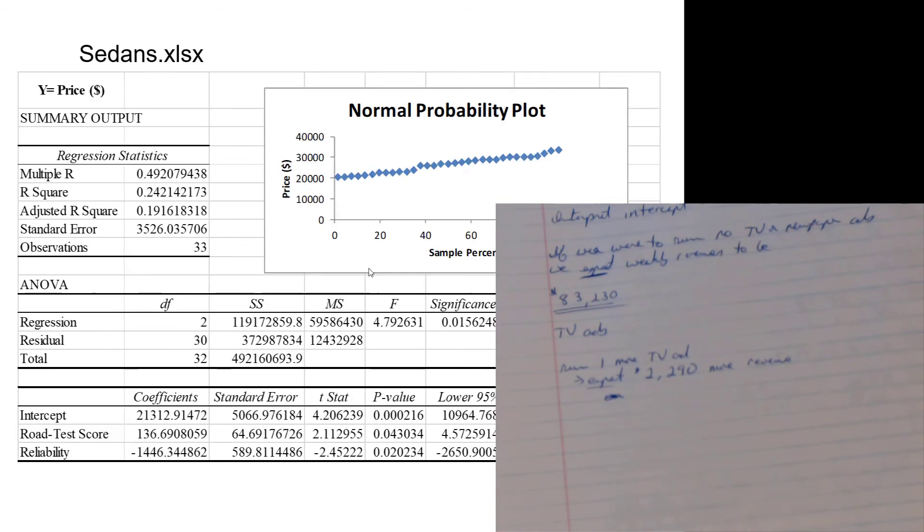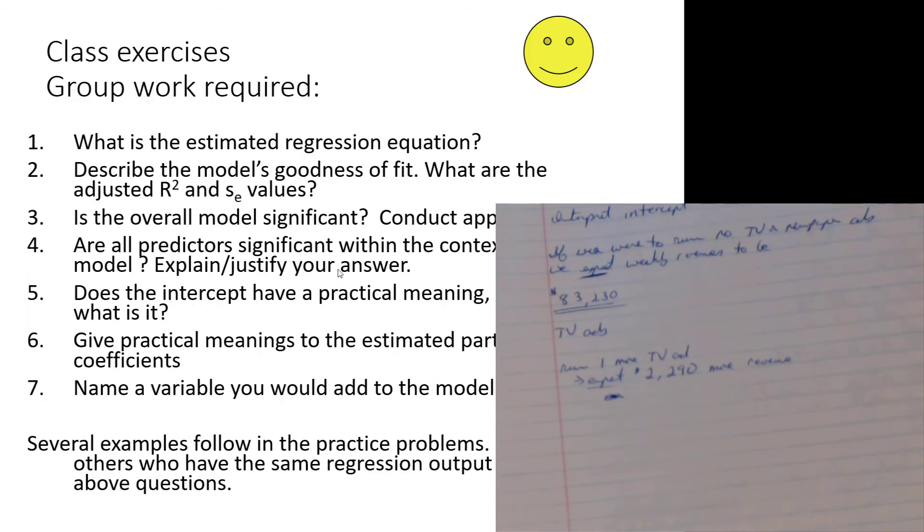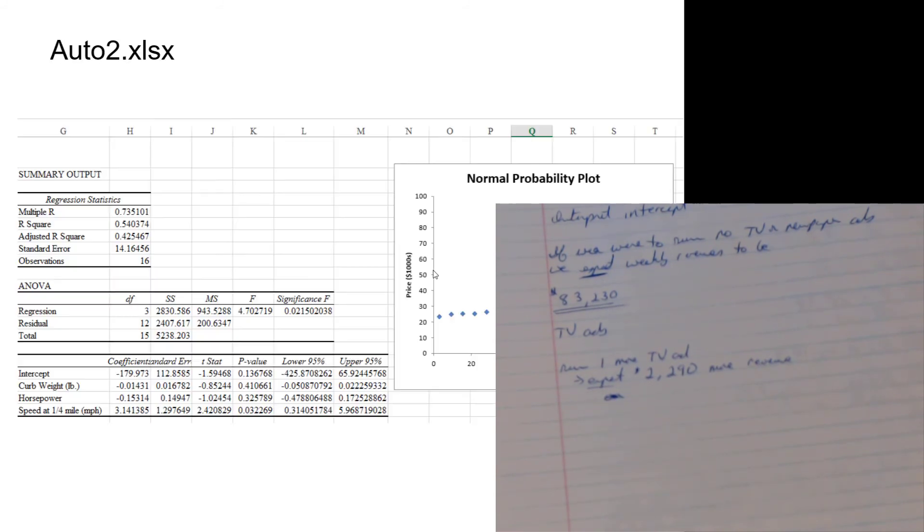That essentially sums up a lot of the basic questions that we run through. Got the practical meaning, got the meanings for the coefficients, explained the predictors, overall model, R-squared - pretty good. I'm not expecting you to note some nervousness about the sample size, but I will note some nervousness about the sample size. We could also make a prediction, and that's not something we haven't done yet, so let's do it.